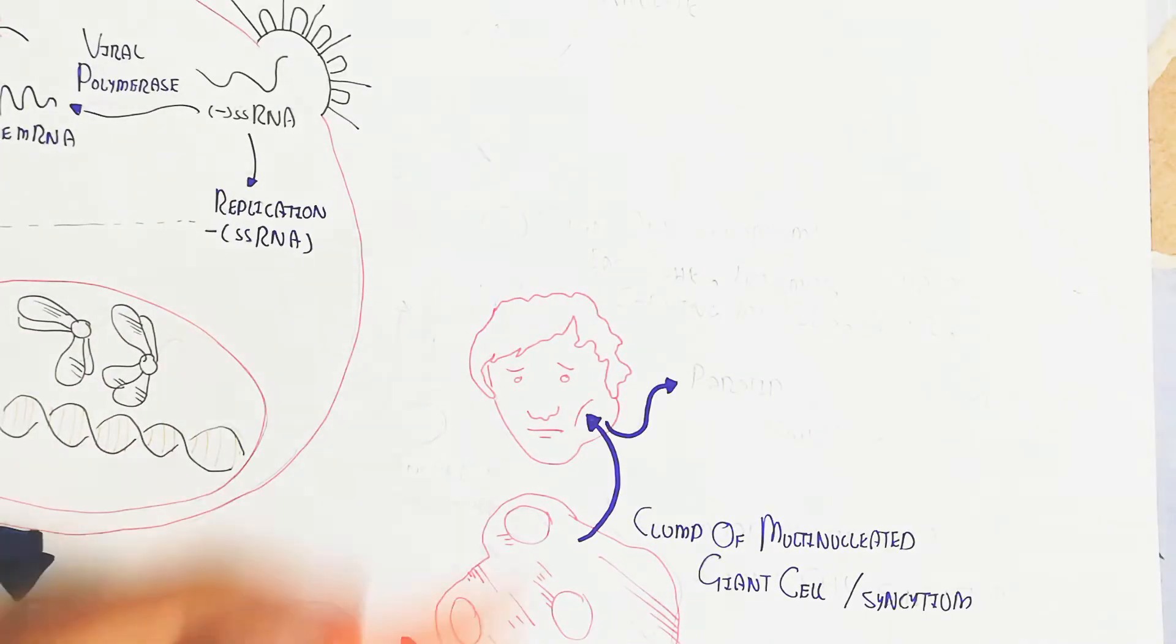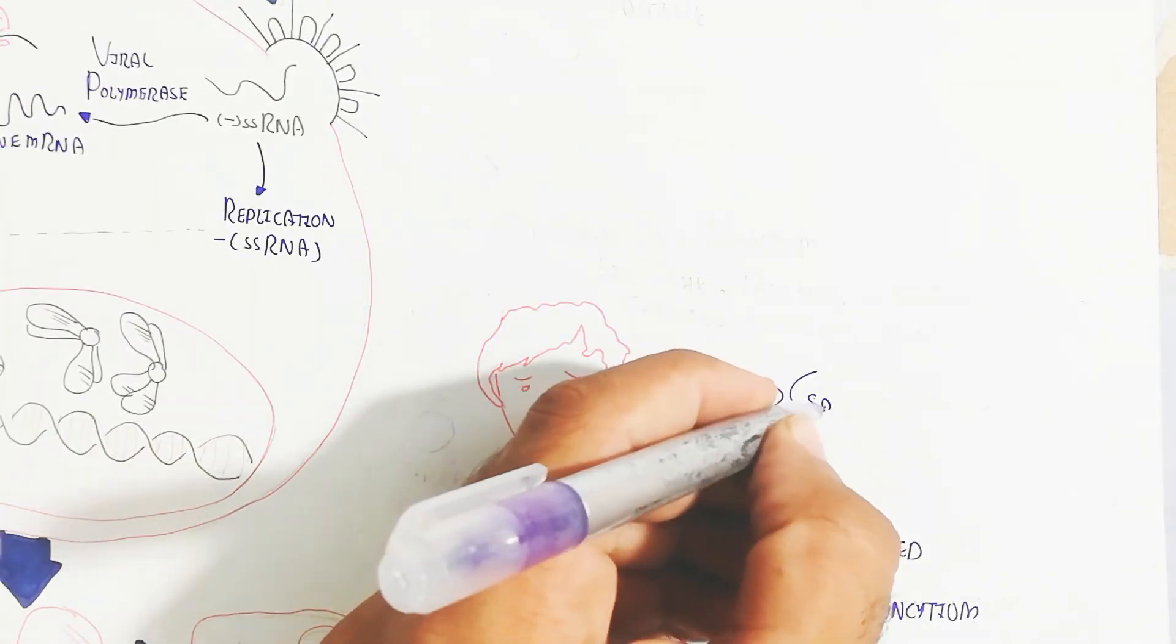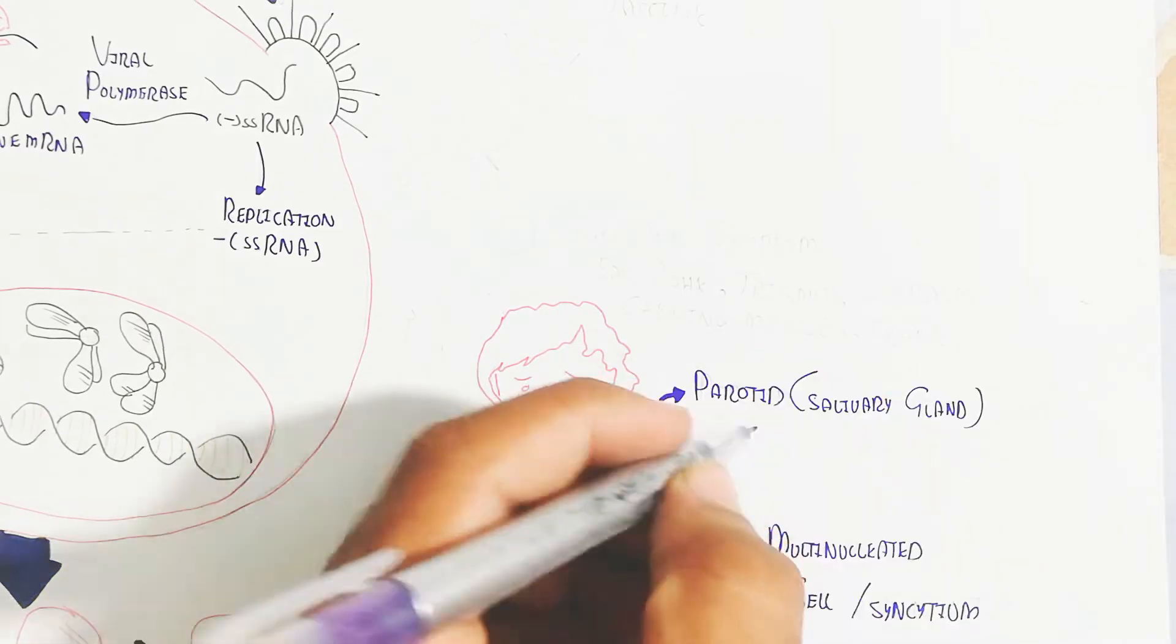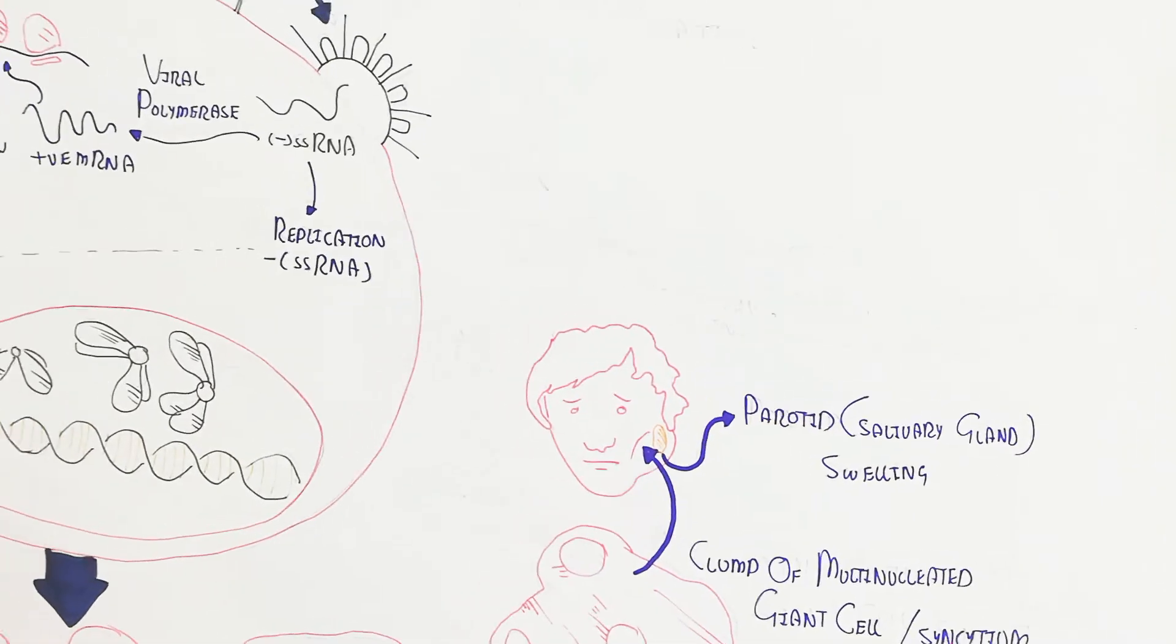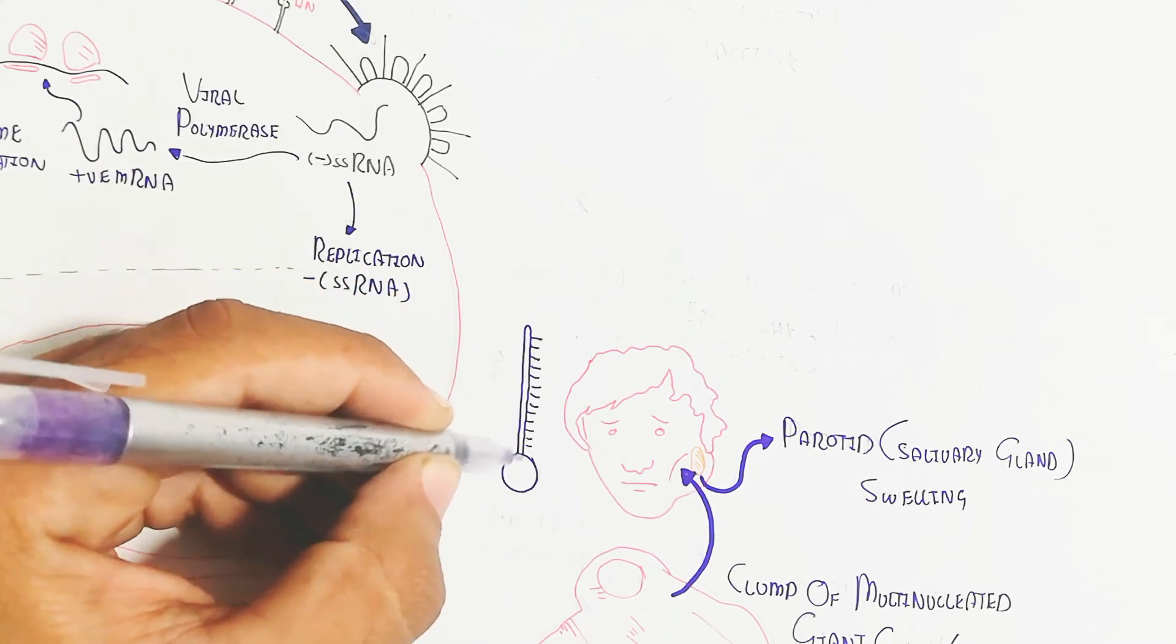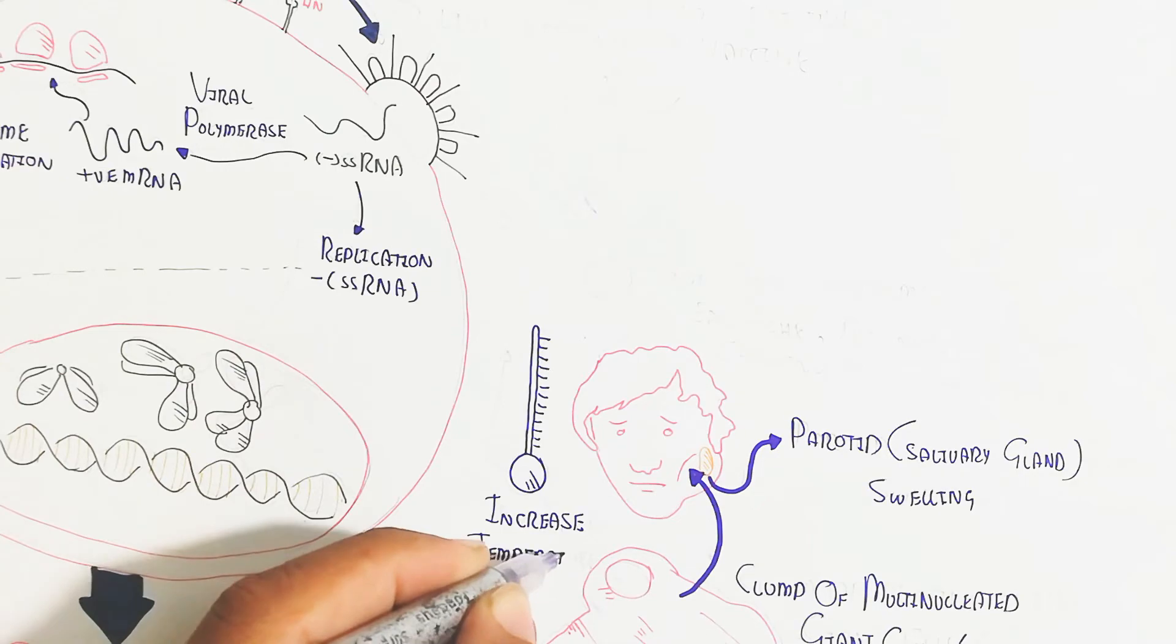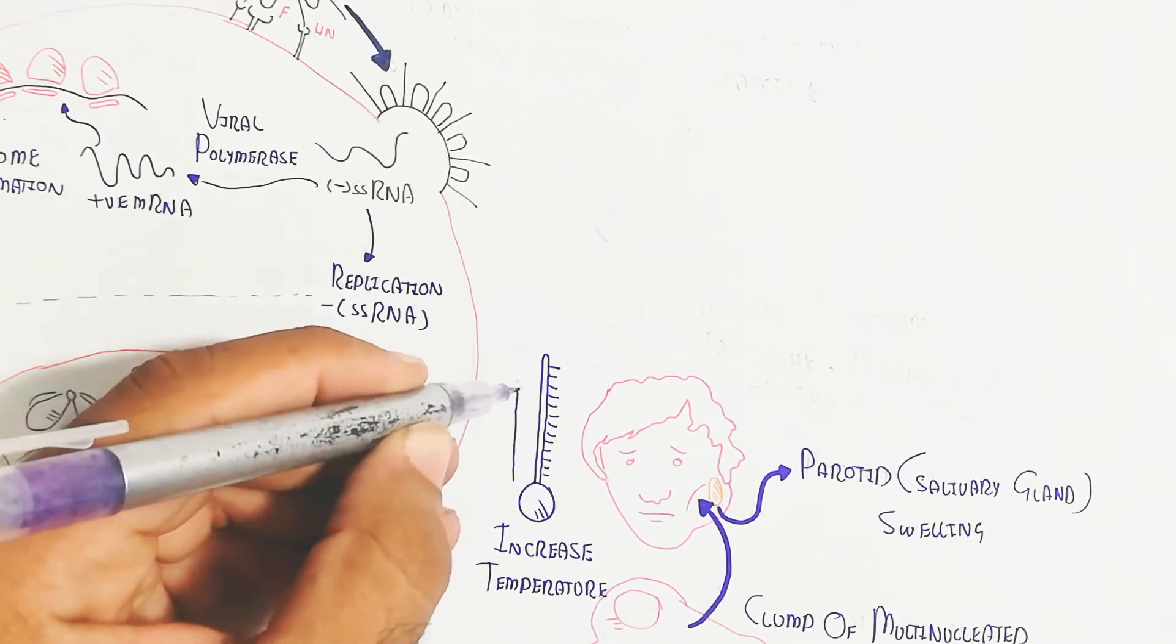In this way, the complication in the signs and symptoms will be parotid salivary gland swelling. In this way, increased temperature due to high fever and earaches, and trismus, the spasm of chewing muscles, and fever.